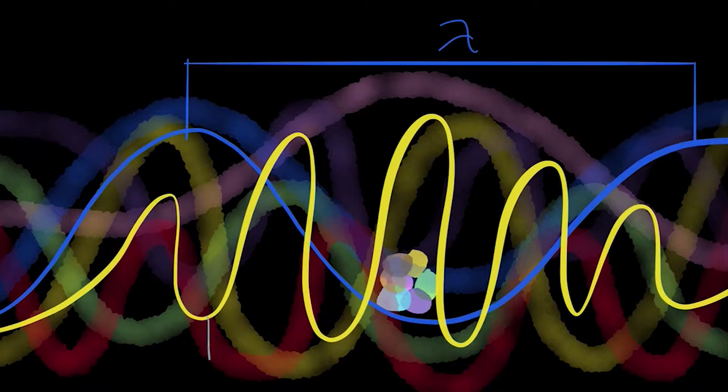To see electrons, atoms and molecules we need very short wavelengths, a tenth of a nanometer or less. But where can we get such a wave?